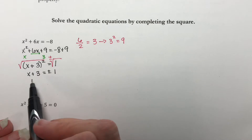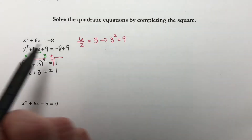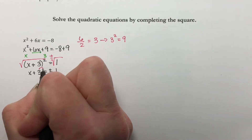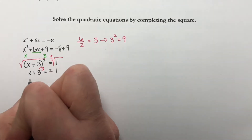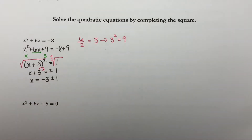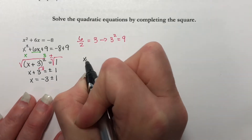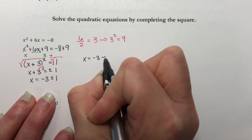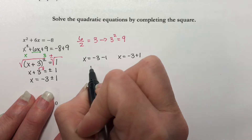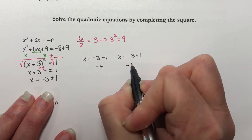So we get x plus 3 is equal to plus or minus the square root of 1, which is 1. Now I want x by itself. Technically, I have two equations: x plus 3 equals 1, and x plus 3 equals negative 1. I suggest that you don't split it up until you've done as much of the algebra as you can. Now I can subtract 3 from both sides and I get x equals negative 3 plus or minus 1. I have either x equals negative 3 minus 1 or x equals negative 3 plus 1. So x is negative 4 or x is negative 2.